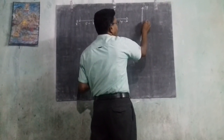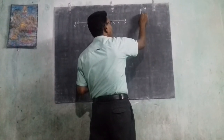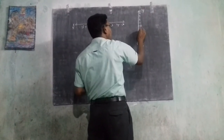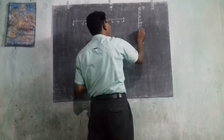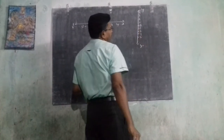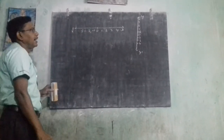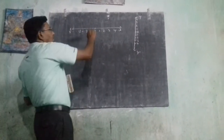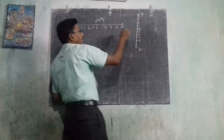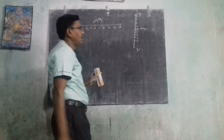The middle of the vertical line becomes 0. The upper portion has positive integers 1, 2, 3, 4, and the lower portion has minus 1, minus 2, minus 3, minus 4. This is our vertical line. The point 0, where the two lines meet, is known as the origin.